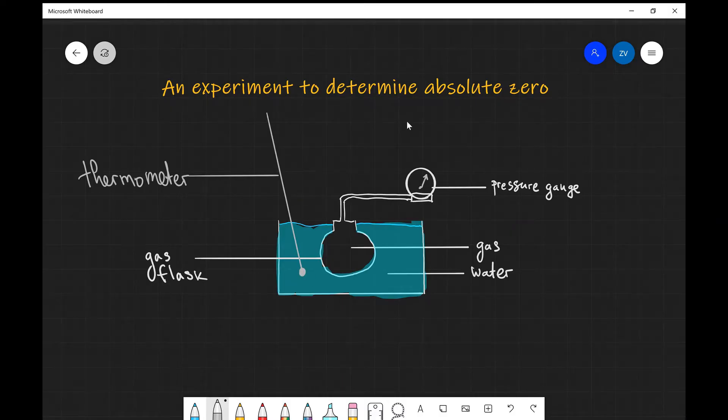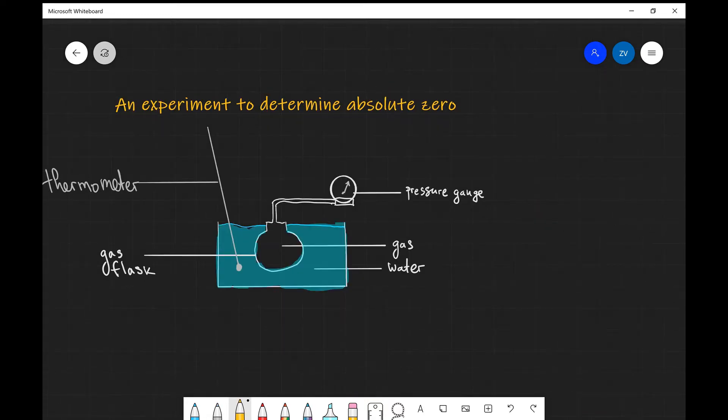Now the idea is that we're going to be heating this setup, usually with a Bunsen burner underneath, and we're going to be taking readings of the temperature and the pressure. Now as with any experiment,